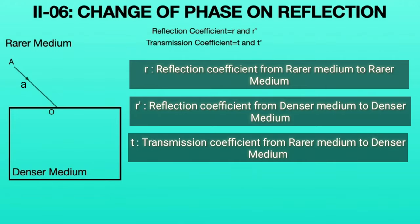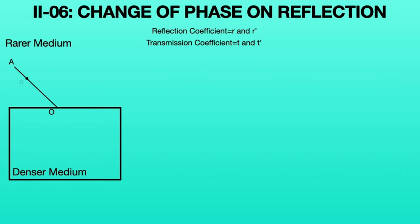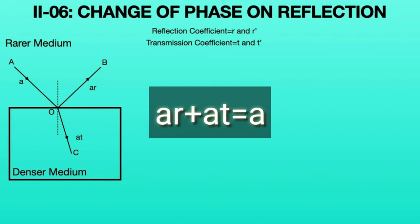T represents the transmission coefficient from rarer to denser medium, and T dash represents the transmission coefficient from denser medium to rarer medium. The light ray AO with intensity A is incident on O, then it reflects into ray OB with intensity AR, since r is the reflection coefficient in the rarer medium. Similarly, the light ray transmits into ray OC with intensity AT, since T is the transmission coefficient from rarer to denser medium. Adding AR and AT gives A. This can be seen in the left-hand side animation.